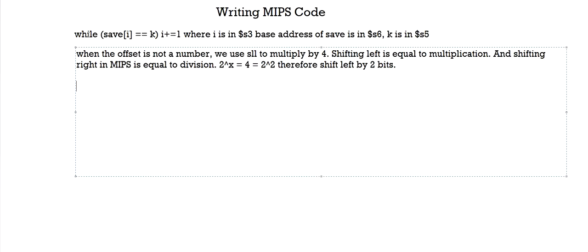This starts off with a while loop. In MIPS, whenever you need to loop, you need three things: a branch instruction — a BEQ or BNE instruction — and a jump command. So for this while command, I've put a label 'loop' here. Now we're going to shift left i, which is in S3, by 2 bits.